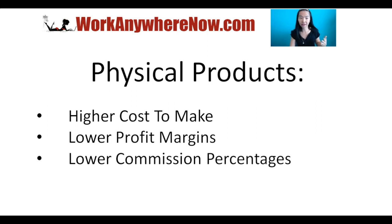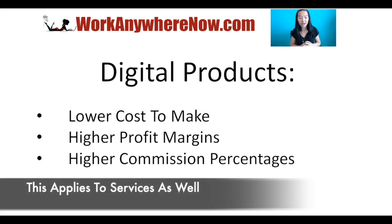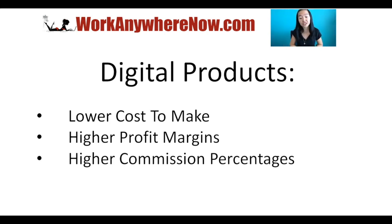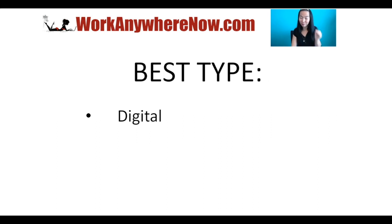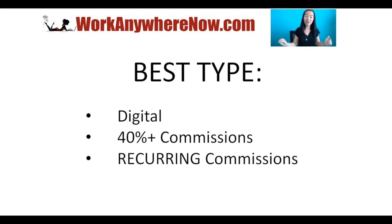Physical products have higher costs to make, so they have lower profit margins by design. That means affiliate programs promoting physical products will usually come with a lower commission percentage because of those lower profit margins. But if you are promoting digital products, they have a lower cost, so a higher profit margin, and usually higher commission percentages. The best type of affiliate program will have 40% plus commission rates.